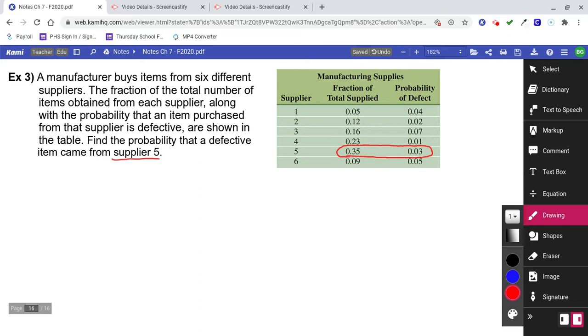So supplier five is going to be the numerator for my Bayes' theorem. So all I'm going to have to do is big ginormous fraction bar, 0.35 times 0.03. And then just put everything on the bottom, part over total.